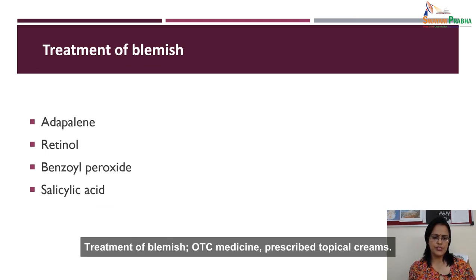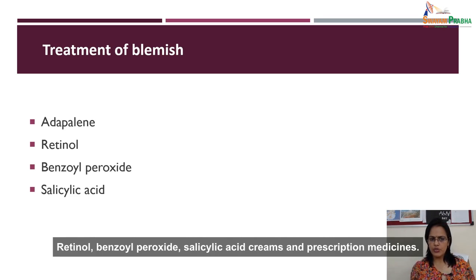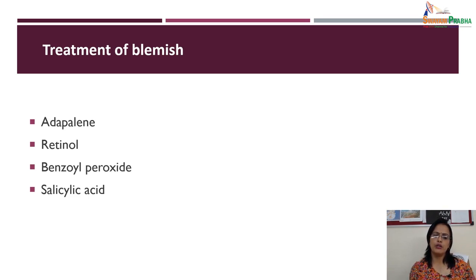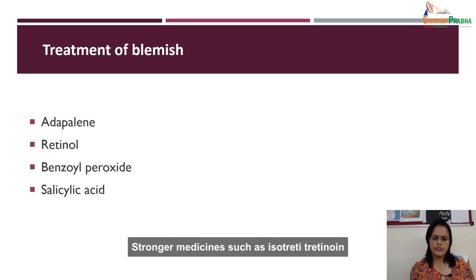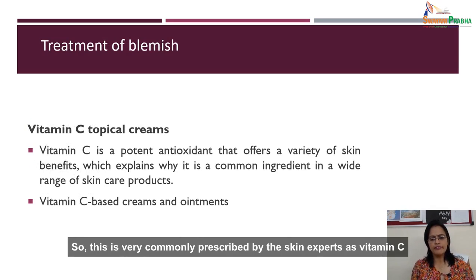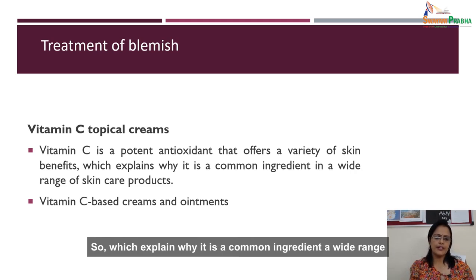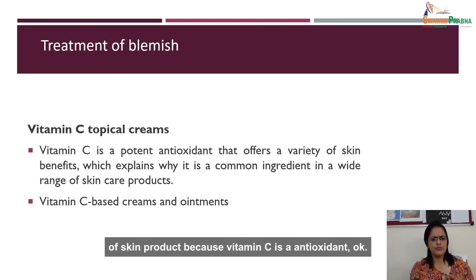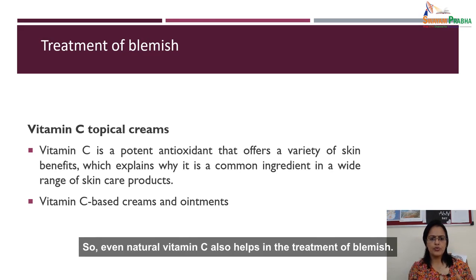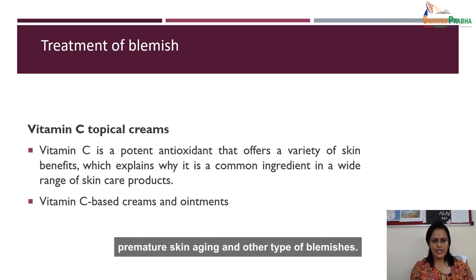Treatment of blemish includes OTC medicines and prescribed topical creams such as retinol, benzoyl peroxide, and salicylic acid creams. Stronger medicines such as isotretinoin may be needed for treatment. Vitamin C topical cream is very commonly prescribed by skin experts. Vitamin C is a potent antioxidant offering a variety of skin benefits, which is why it is a common ingredient in a wide range of skin products. Vitamin C-based creams and ointments are used to treat hyperpigmentation, premature skin aging, and other types of blemishes.